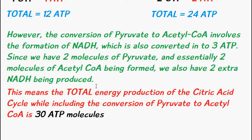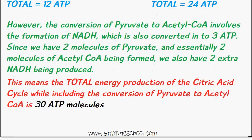So the total energy production from the citric acid cycle when it includes the conversion of pyruvate to acetyl-CoA will be 30 ATP molecules.